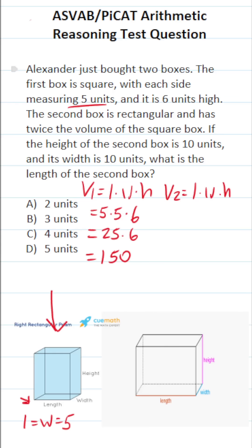Well, according to the problem, we know the volume of the second box is twice the volume of the first box. So we're going to take 150, multiply it by two, and that's going to give us the volume of the second box. 150 times two is 300. So this becomes 300 equals.